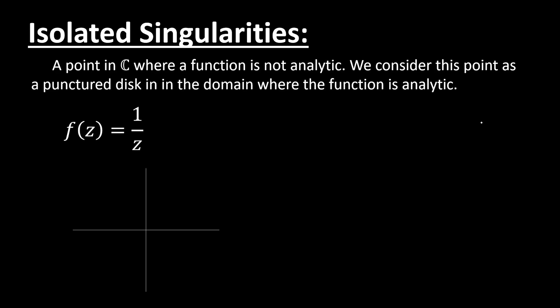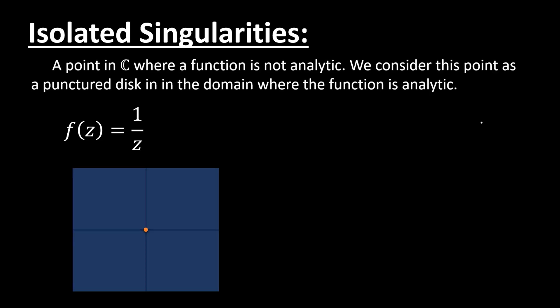Here we have an example of the function 1 per z. Clearly, this function breaks down at z equals 0, because we get an indeterminate form. At the point z equals 0, the function breaks down, but in the entire rest of the complex plane, our function is analytic. And particularly, this point z0 is what we would call an isolated singularity.